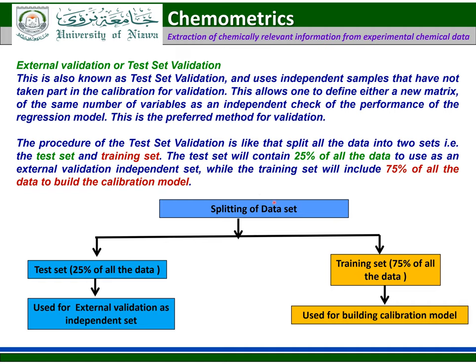In this diagram, you can see the whole dataset is split into two sets: the test set containing 25 percent of the data, and the training set containing 75 percent of the data. The training data is used to make the calibration model. Once the calibration model is ready, it is then validated with the help of the test set.